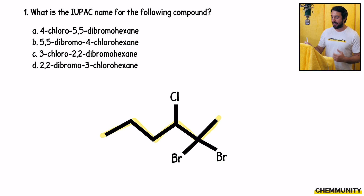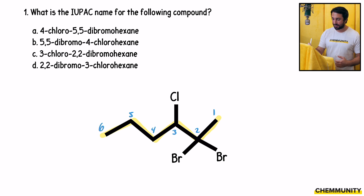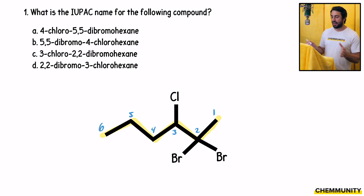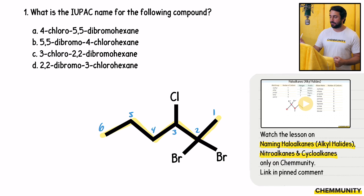We want to number in such a way so as to give the first substituent occurring soonest. So we have to go right to left: that's going to be one, two, three, four, five, six. This is going to be a hexane — we know we have a six-carbon chain.